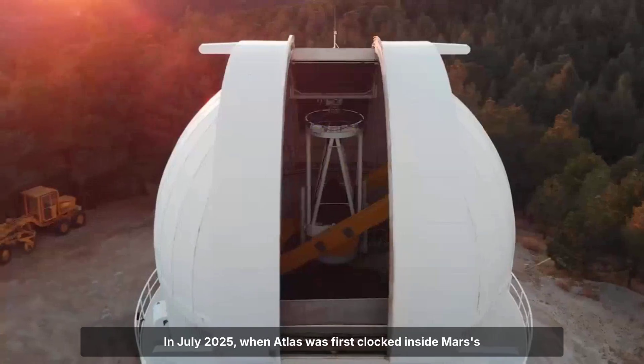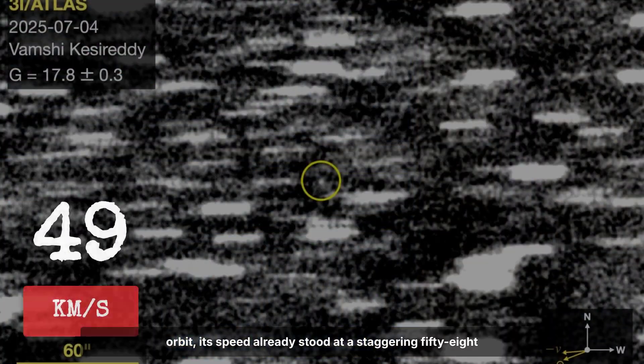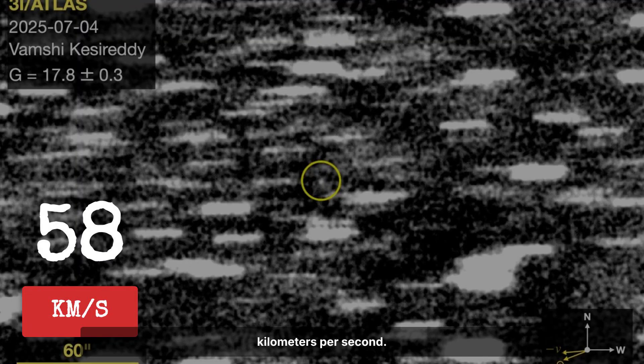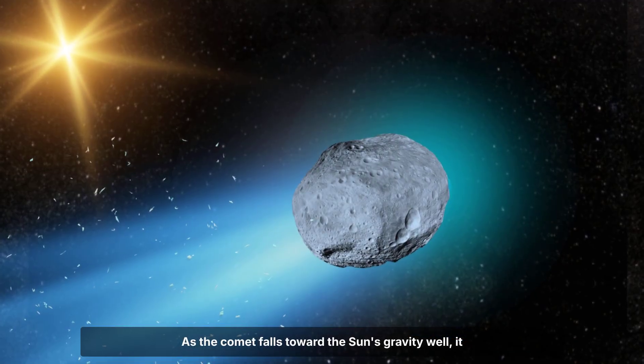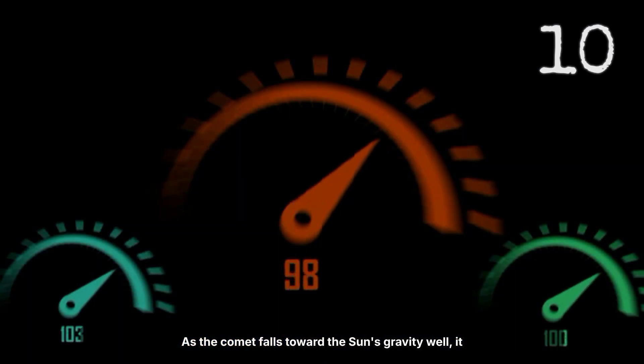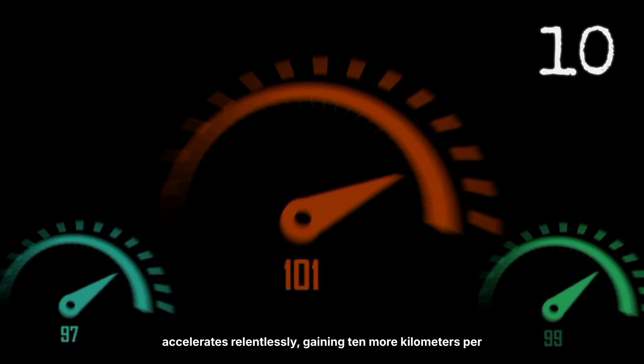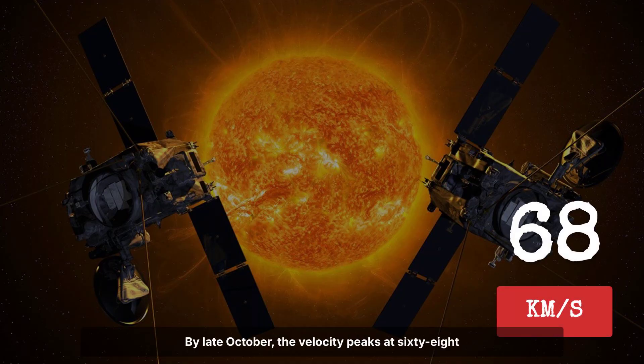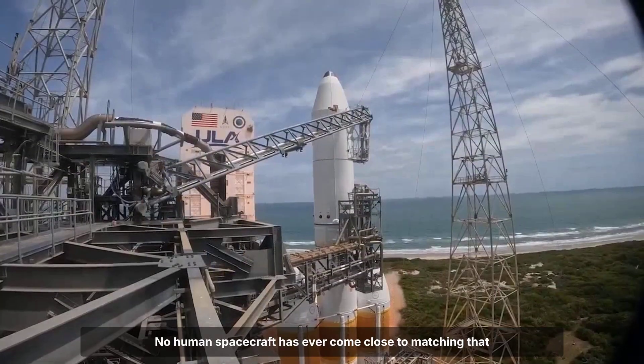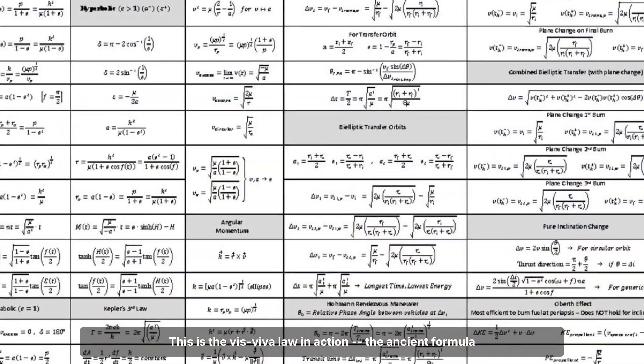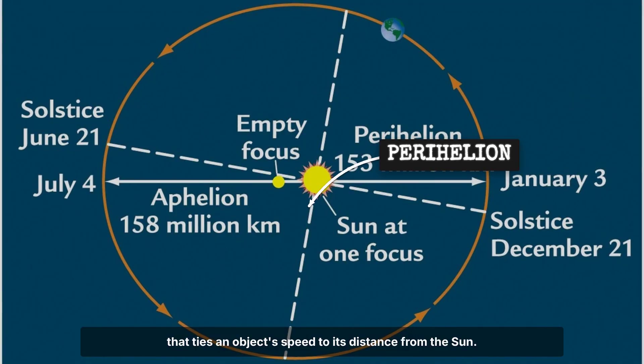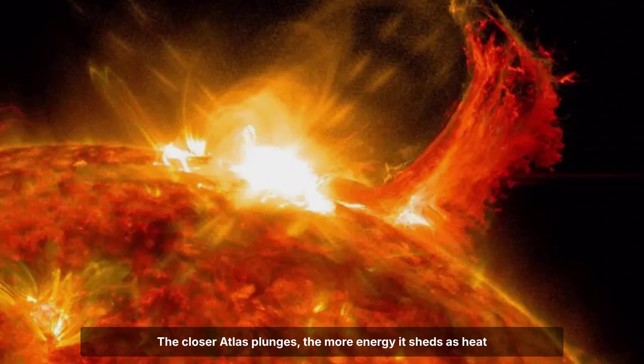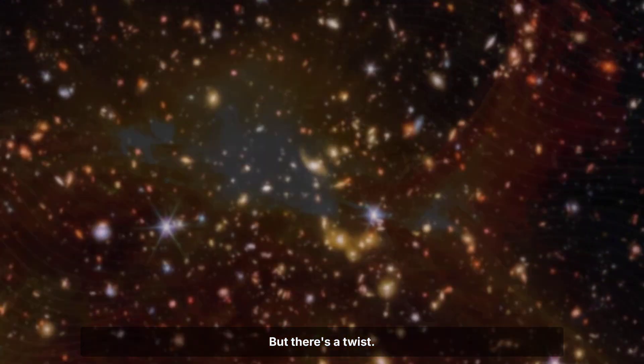In July 2025, when Atlas was first clocked inside Mars' orbit, its speed already stood at a staggering 58 kilometers per second. That's nearly 130,000 miles per hour, fast enough to cross from New York to Tokyo in less than a minute. But the numbers don't stay put. As the comet falls toward the sun's gravity well, it accelerates relentlessly, gaining 10 more kilometers per second by perihelion. By late October, the velocity peaks at 68 kilometers per second. No human spacecraft has ever come close to matching that pace. This is the vis-viva law in action, the ancient formula that ties an object's speed to its distance from the sun.